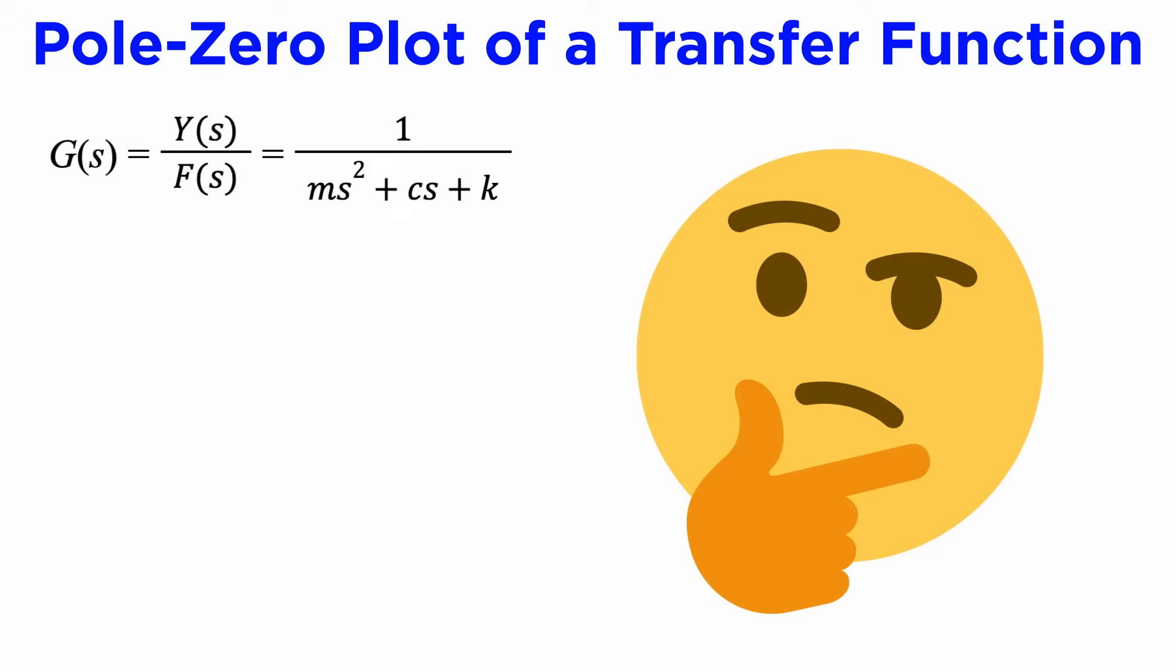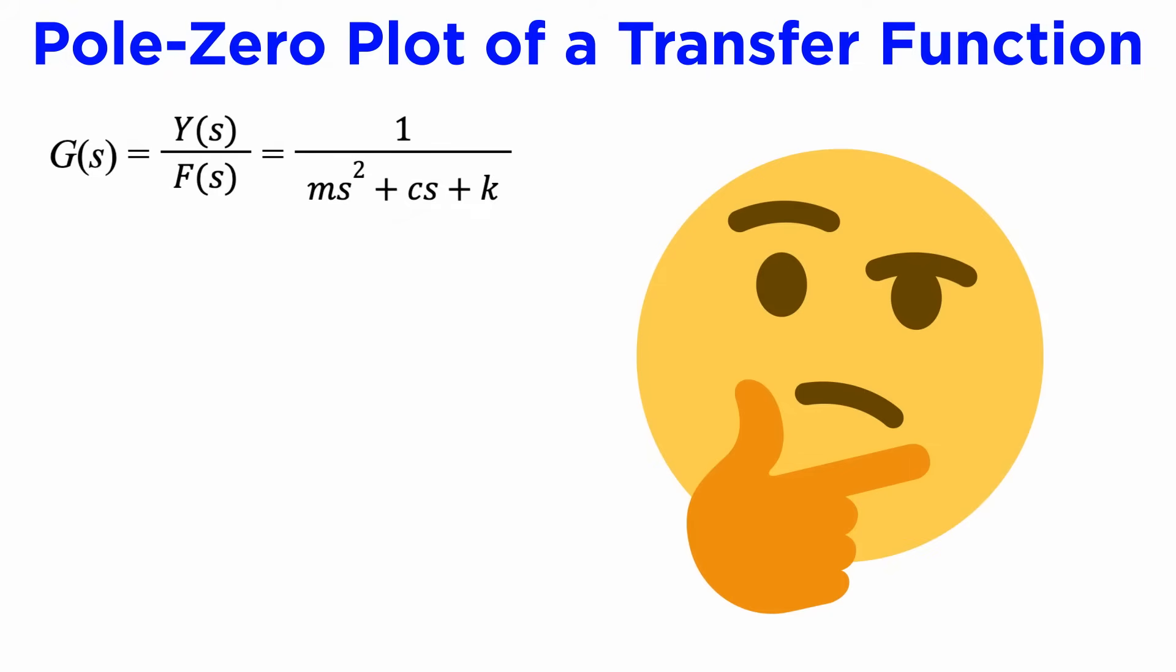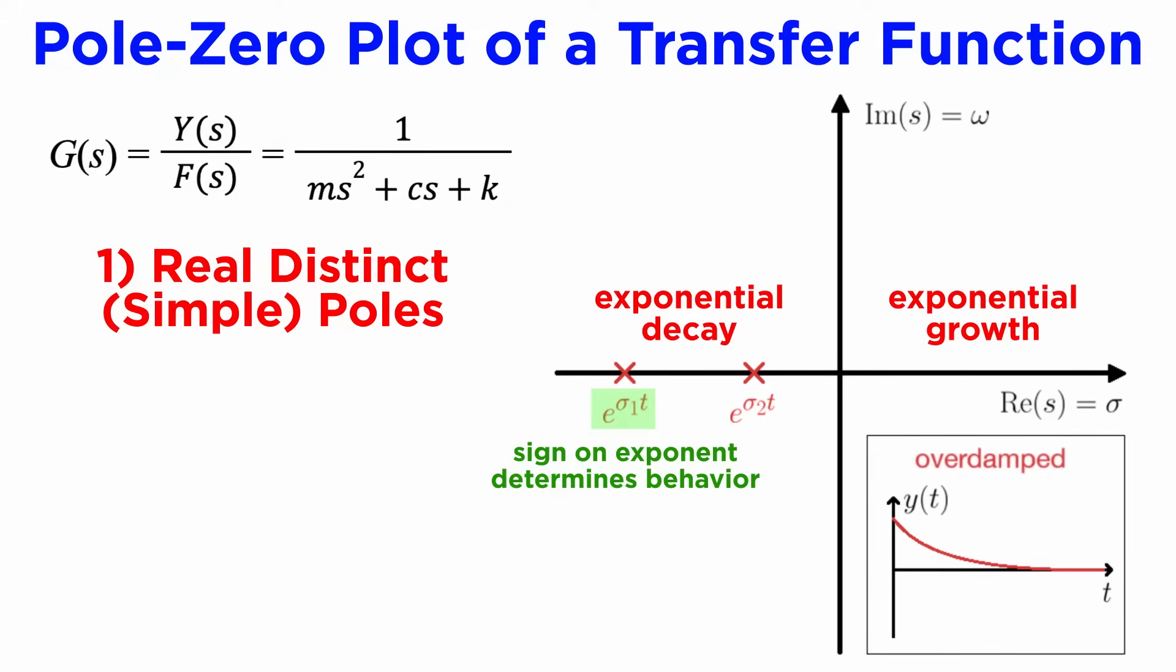If we draw the pole-zero plot of our transfer function G(s), the locations of the poles can be in one of four locations. If both poles are on the real axis, it tells us that if we give our system some non-zero initial conditions with zero input and observe the natural response, we will get either exponential growth or exponential decay, which we could call an overdamped system.